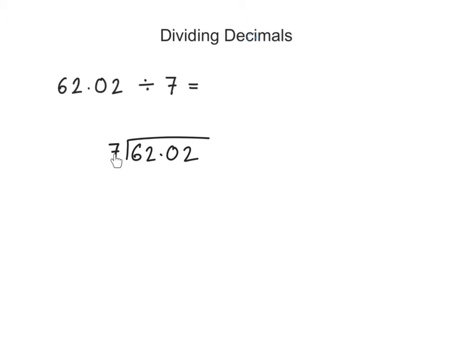Now the first thing that we do, we ask ourselves: how many 7s go into 6? Well clearly there are no 7s in 6, so I write 0 here. And then I ask myself: how many 7s go into 62? Well clearly in 62 there are 8 lots of 7. And 7 times 8 is 56. So the remainder here — 62 minus 56 — is 6.